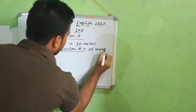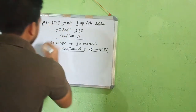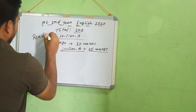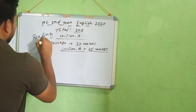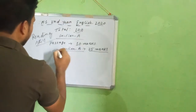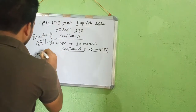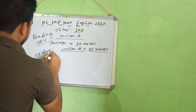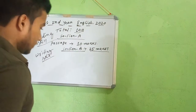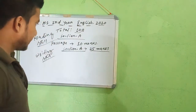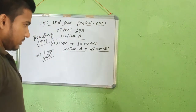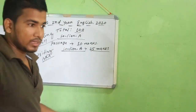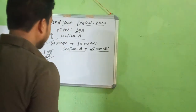Total 25 marks for Section B. Section A is reading skill and Section B is writing skill. Section B — writing skill — total marks is 25. So 25 marks breakdown is as follows.